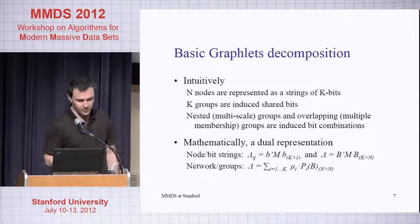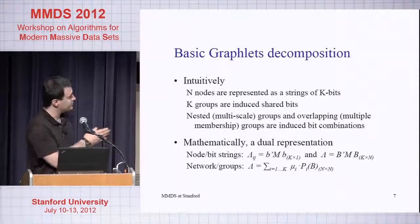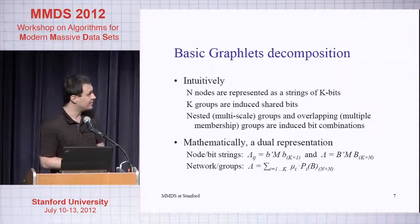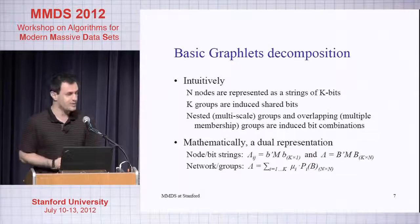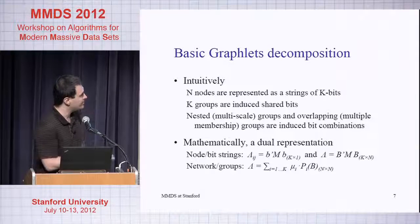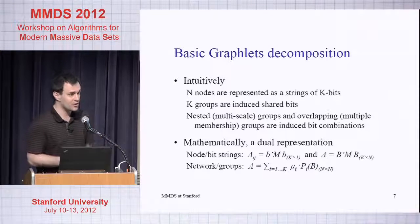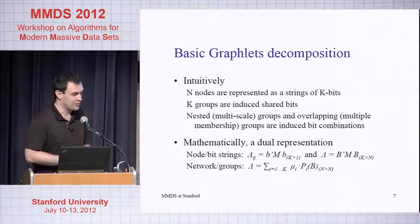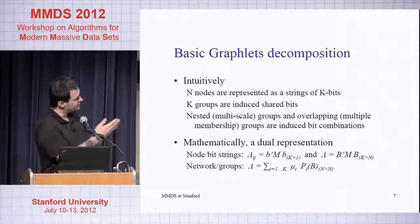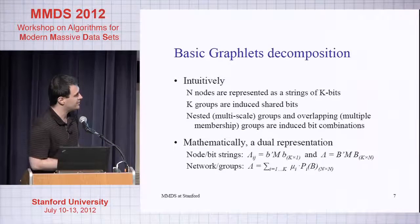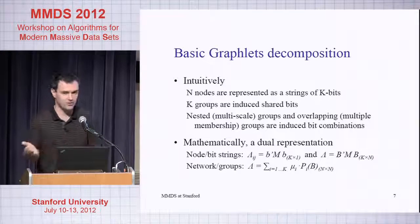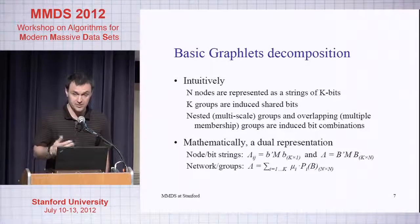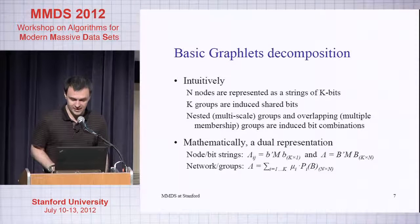Mathematically we have a dual representation. As I wrote before, you can look at the lambda matrix as B M B transpose, or you can also rewrite the lambda matrix as the sum over my K basis elements of mu_i, which is the diagonal element that tells me how much traffic, how much connectivity is coming out of basis element i, and this Pi of B is just the projection of my binary matrix onto the graph space. So it's a binary graph of size n by n.